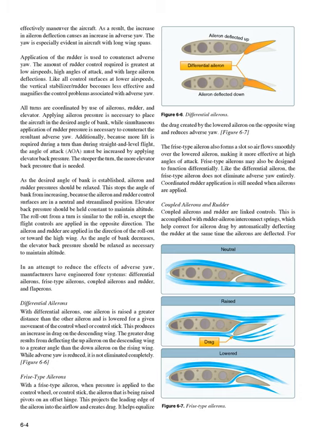Manufacturers have engineered four systems to reduce adverse yaw: differential ailerons, frisee-type ailerons, coupled ailerons and rudder, and flaperons. With differential ailerons, one aileron is raised a greater distance than the other is lowered for a given control input, producing increased drag on the descending wing. The greater drag results from deflecting the up aileron on the descending wing to a greater angle than the down aileron on the rising wing. While adverse yaw is reduced, it is not eliminated completely.